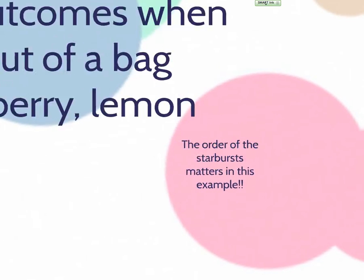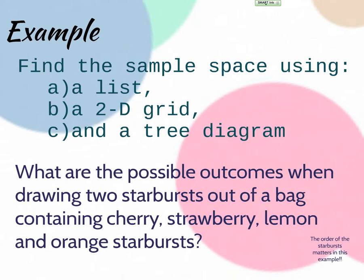So it's going to be two different things if I pull out a cherry and a strawberry or a strawberry and a cherry. We're just going to say we're going to eat them in that order, so that changes it. One thing I was going to mention is that a lot of times when we make our lists and things, we don't write down the full word. So we're going to write down C for cherry, S for strawberry, L for lemon, and O for orange.